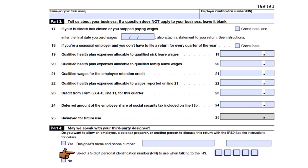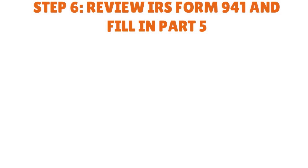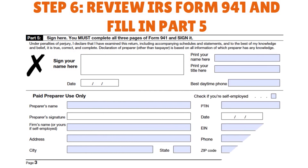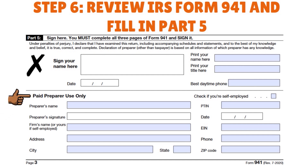Step six: Part 5 is where you sign the form. Enter your name, the date, print your name and title, your best daytime phone number, and the best time to contact you. If you use a tax preparer, ask the preparer to fill in the bottom of Part 5 with their name, signature, address, city, and PTIN — the professional tax identification number.